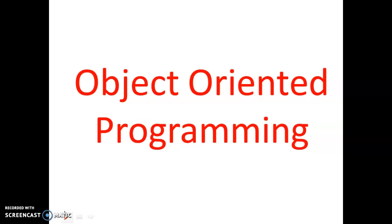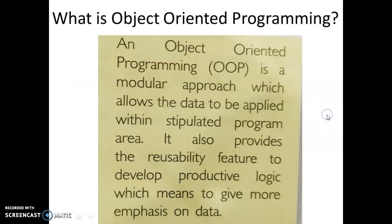So what is Object Oriented Programming? Object Oriented Programming is a modular approach which allows the data to be applied within distributed program areas. That means here we are working on some data and functions together. Suppose 5 and 6 are data and we want to add them. So 5 and 6 are data and addition is the function. We are working together with some data and functions in Object Oriented Programming.